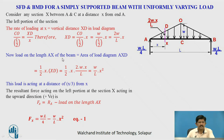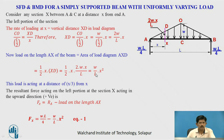The load on length AX of the beam equals the area of the loading diagram. Considering this triangular load, it is one-half base into height — one-half base is x, height is xd. So it is one-half into x into 2W upon L into x, which equals W by L into x square. And the load is acting at a distance of x by 3 from x.